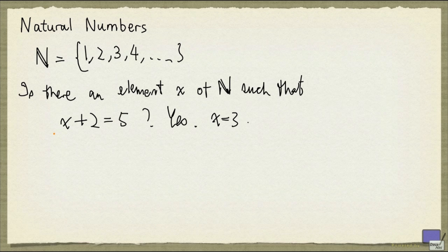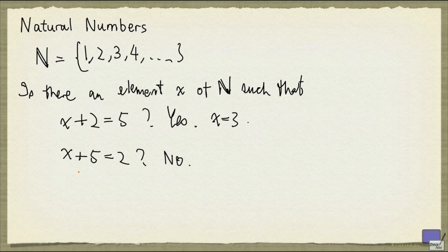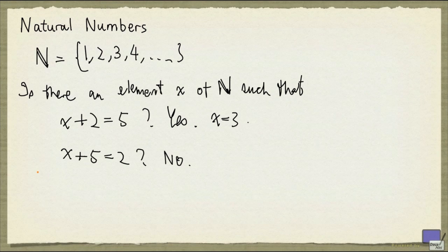Since ancient times, questions that can be abstracted by this type of equation have already been studied and solved. And naturally, one can ask: is there an element x of N such that x plus 5 is equal to 2? The answer is no, because 5 is bigger than 2. If you add 5 to any natural number, all you get is numbers bigger than 5 — we can never get back down to 2. And so there's a limitation on just having the natural numbers.